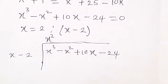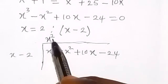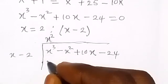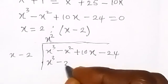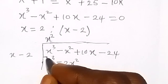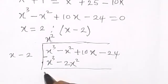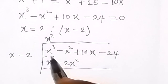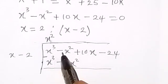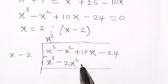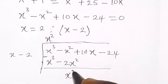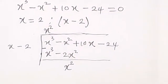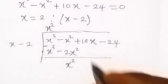We use x squared to multiply the two terms: x squared times x gives x cubed, and x squared times minus 2 gives minus 2x squared. When we subtract, x squared minus 2x squared — that is, minus x squared plus 2x squared — gives us x squared.